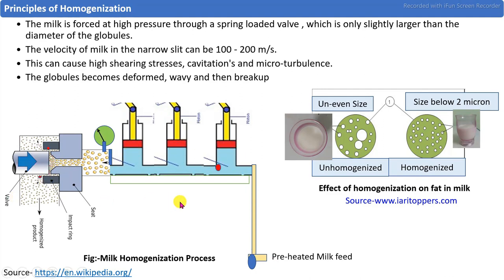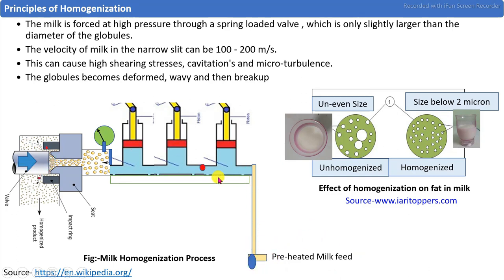The basic production process of homogenization is carried out in between the pasteurization treatments, that is, in between the heat treatments. The basic steps are: first, milk is preheated up to 60 to 70 degrees Celsius and then fed into the homogenizer. In the homogenizer, high pressure is required, with single stage or two stage homogenization. The pressure requirement in the first stage is in the range of 2000 to 2500 psi.